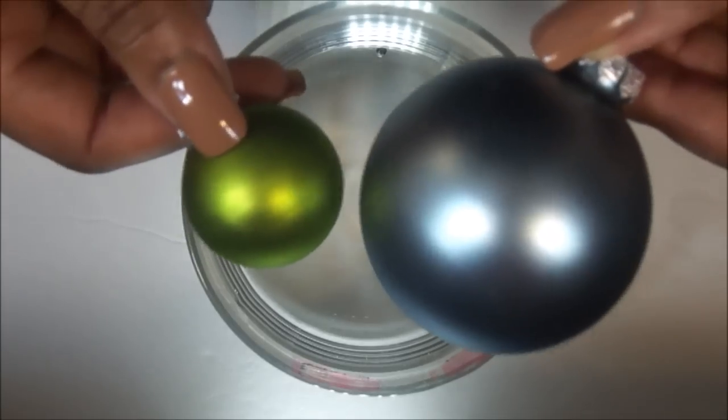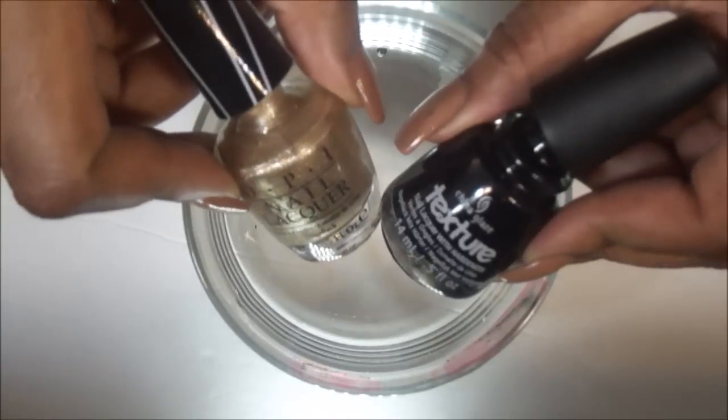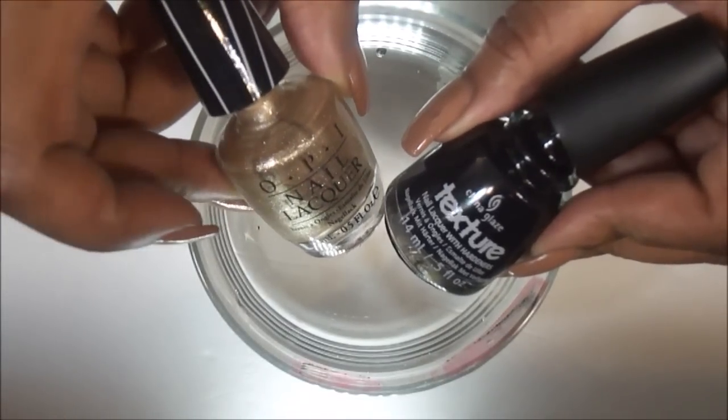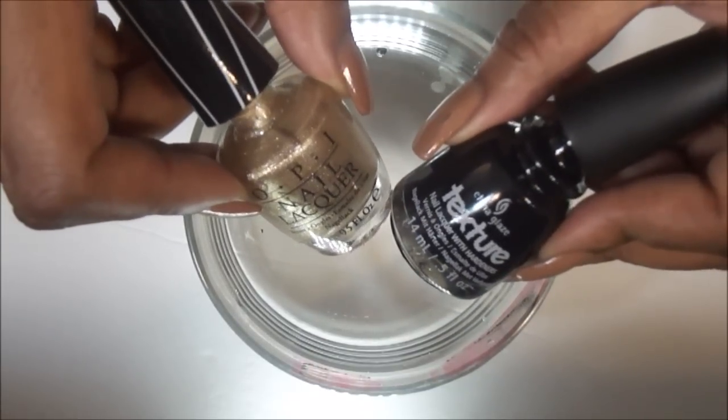For my first two looks I'm going to be using these two colors. I'll list the product names down below. This is OPI and this is China Glaze, the texture polish. Let's get started.